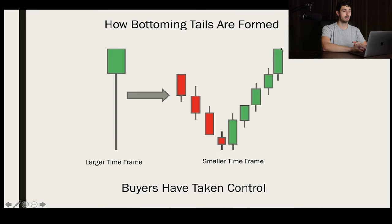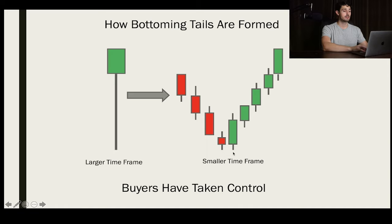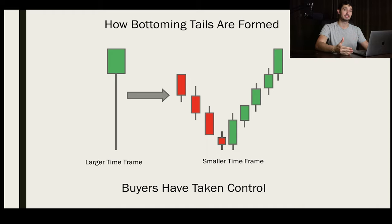The buyers took control and they brought the stock or crypto all the way back up to make new highs, closing up at the top of the body. So we have a really long tail here — the low was all the way down here. But the buyers took control and brought it all the way back up. This is a very bullish candle, meaning the buyers stepped up to the plate and beat the sellers.